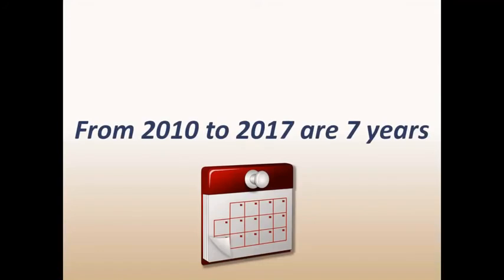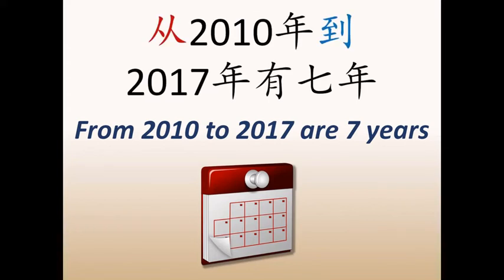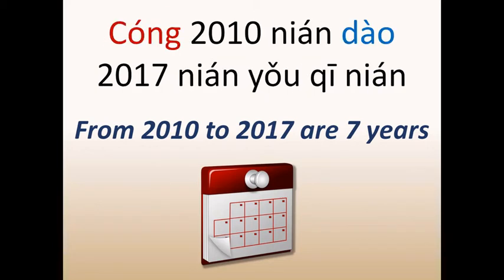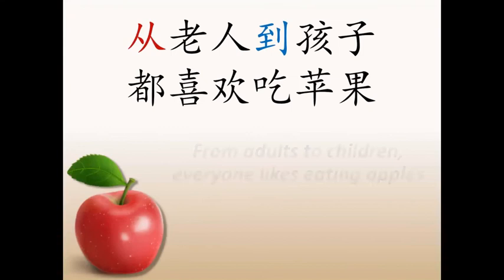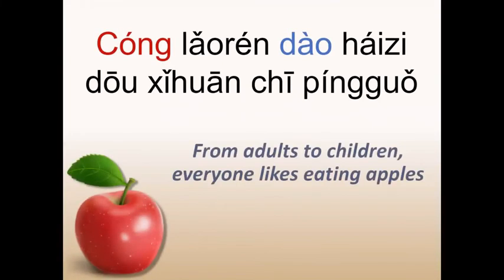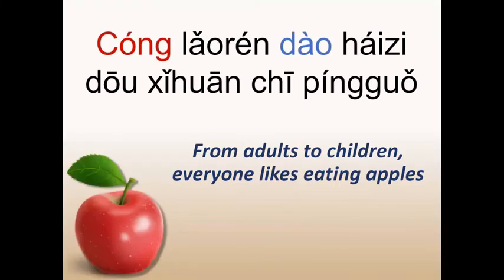Let's practice a little bit. From 2010 to 2017 are seven years: 从2010年到2017年有七年. From adults to children, everyone likes eating apples — this is very similar to the one we've seen before: 从老人到孩子都喜欢吃苹果.